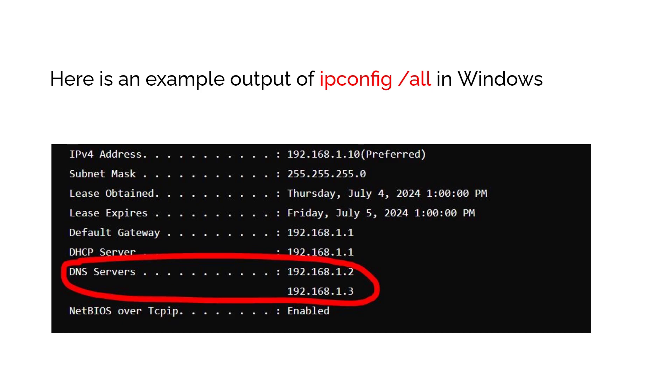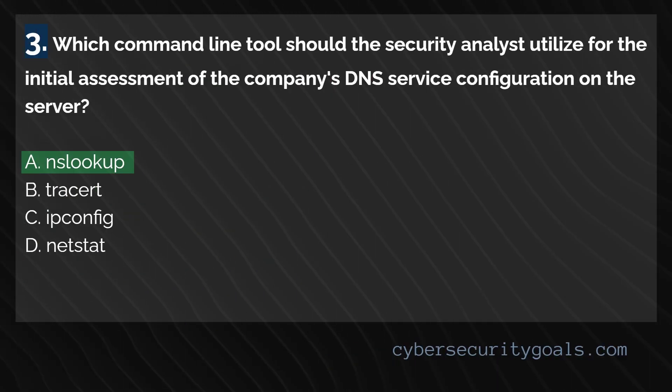If you use ipconfig with the /all switch, you can get some info about the DNS server your computer uses to get domain name info. But that's not the best tool to use to fully assess your company's DNS server configuration on the server. Based on these four options, you'll want to use NSLOOKUP. The NSLOOKUP command line tool is specifically designed for querying the domain name system to obtain domain name or IP address mapping info.